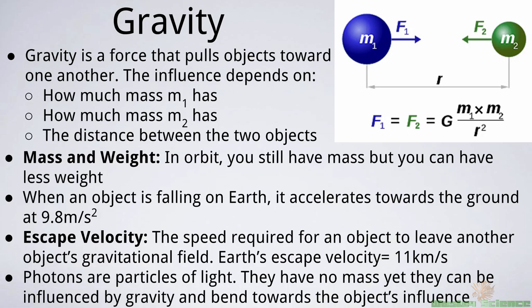Let's talk about gravity. Gravity is a force that pulls objects toward each other. You might think gravity is a lot like magnetism or how protons and electrons attract each other, but it's not — because gravity only pulls objects together, it never repels. With magnets, north and south attract but north and north repel. Same with subatomic particles: a proton and electron attract, but two electrons repel. Gravity doesn't have that repulsion — it's just attraction.